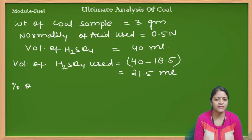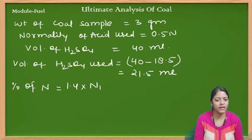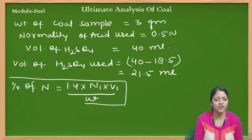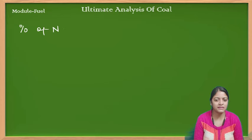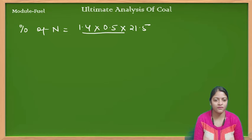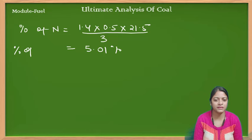अब मैं formula लगा सकती हूँ। Percentage of nitrogen = 1.4 × N1 × V1 / W। तो percentage of nitrogen = 1.4 × 0.5 (normality) × 21.5 (volume of acid used) / 3 (weight of coal sample) = 5.01%। So that is the answer for percentage of nitrogen।